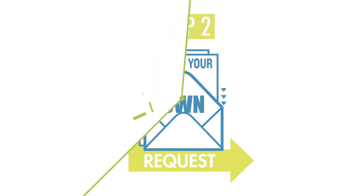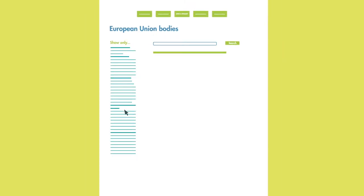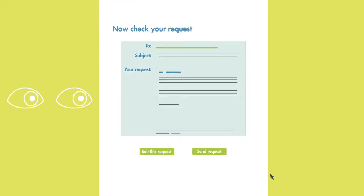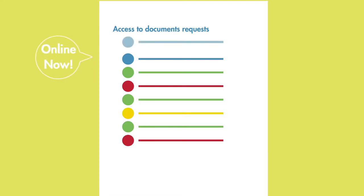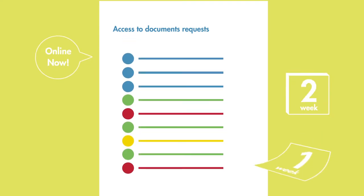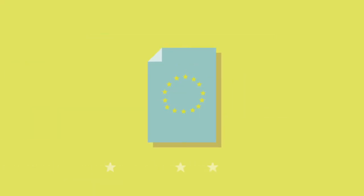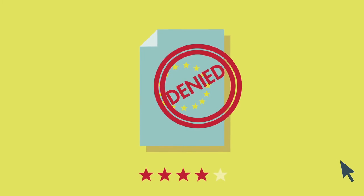Send your own request. Firstly, create an account. Then find the institution to which you will send your request. Then write your question — you can even preview and edit it before sending. Your request is then published online immediately and you should get a response from the EU within three weeks. You can rate the answer you receive, even if the EU has decided not to give you the information you requested.